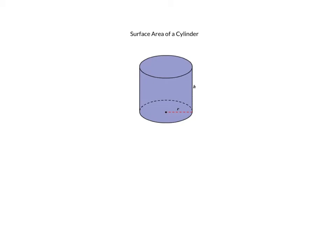Now there are three surfaces in the cylinder. We've got a circular top, we've got a circular bottom, and then we've got this what we call the curved surface area. That's this area here around the outside.